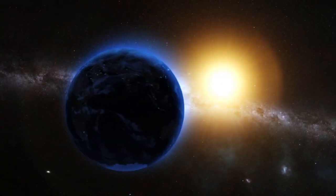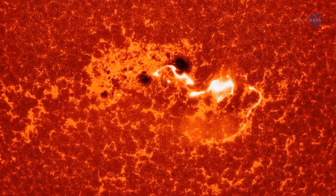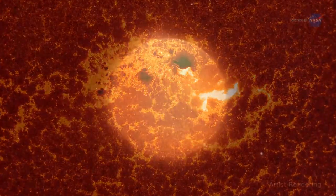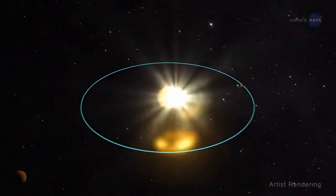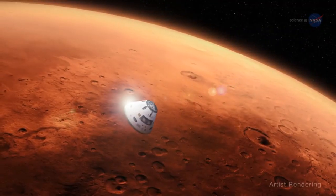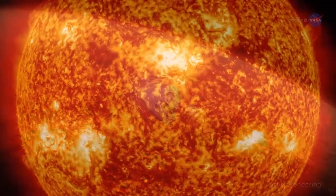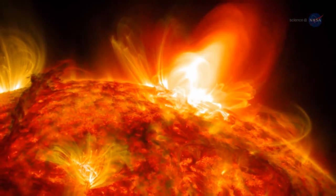Not only will such information improve understanding of how our solar system works, but it ultimately can help protect astronauts traveling to the Moon and Mars by providing better information on how the Sun's radiation affects the space environment they must travel through.